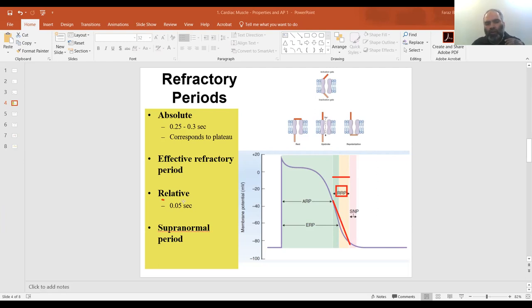So this is the last two-thirds of the repolarization. This is where it's called relative refractory period. Its value is 0.05 seconds. This is where if you apply a strong stimulus, a stronger than normal stimulus, a new action potential will generate and will also start to propagate.